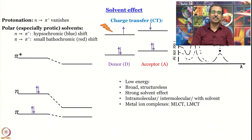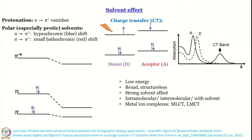Here is a schematic representation of the absorption spectra. The absorption spectrum of the acceptor and the donor are shown separately; the charge transfer band appears only when donor and acceptor are present together in sufficiently high concentration, or covalently bonded together. It appears at longer wavelength — lower energy — it is broad and structureless. These are the characteristics of charge transfer bands. We stop here, and in the next module we will talk about structured absorption spectra.